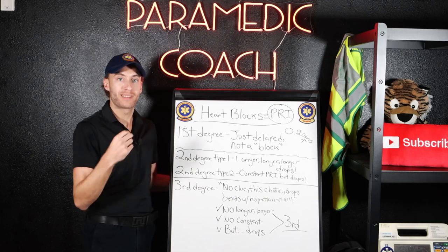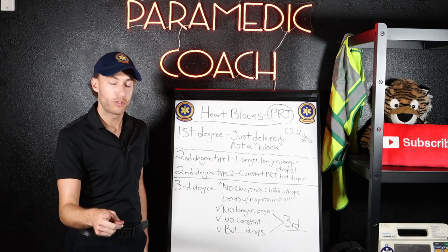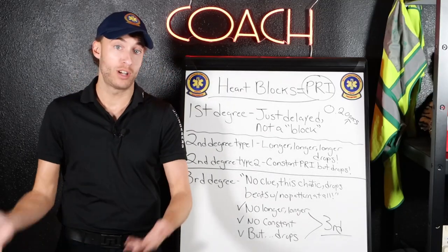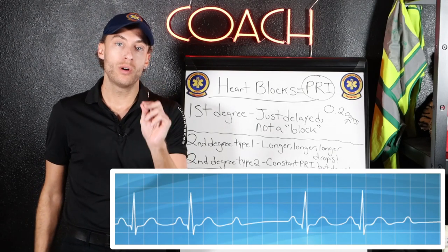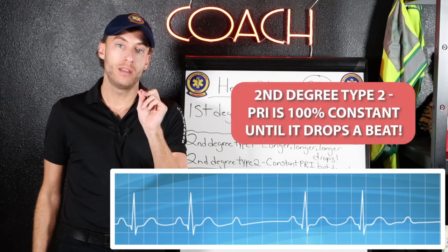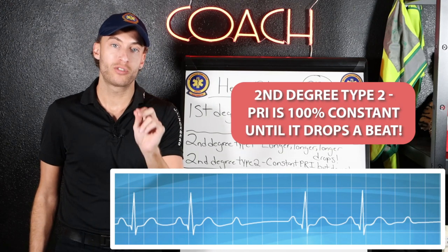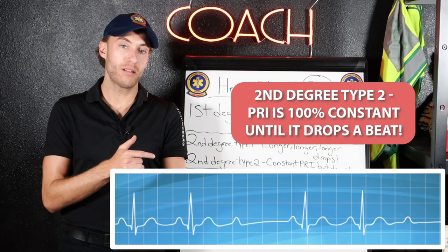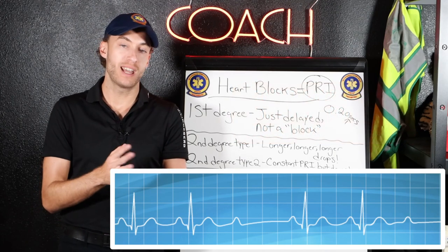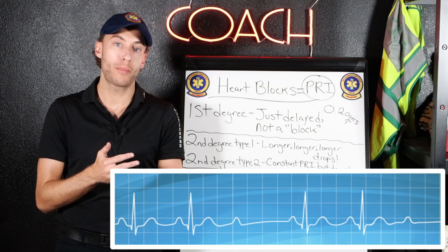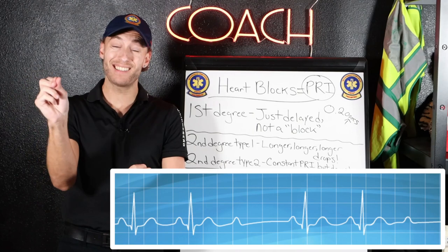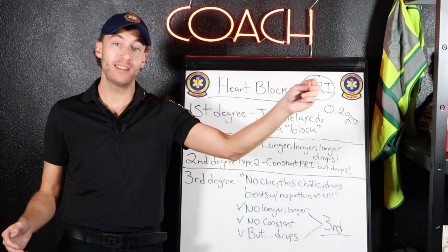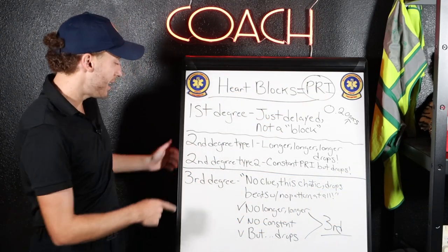That is completely different from the second degree type 2. With type 2, you stare at the PRI and notice it is 100% constant until it drops a beat. It's not longer-longer-drops. The PRI stays exactly the same, and then a beat just drops — then goes back to being constant, and drops again. That is second degree type 2.